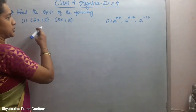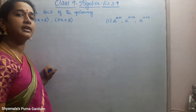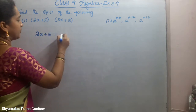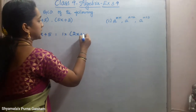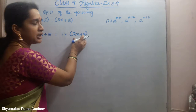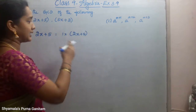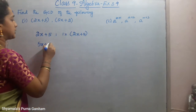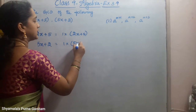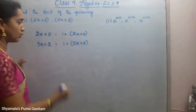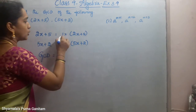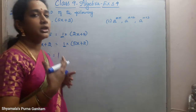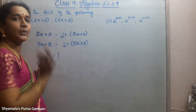The first one is (2x + 1) and (5x + 2). We are asked to find the GCD. For 2x + 1, we can write it as 1 × (2x + 1). This is a linear polynomial, so we cannot split it further — the only other factor is 1. Similarly, 5x + 2 = 1 × (5x + 2). So the GCD for these two terms is only 1, as there is no other common factor.